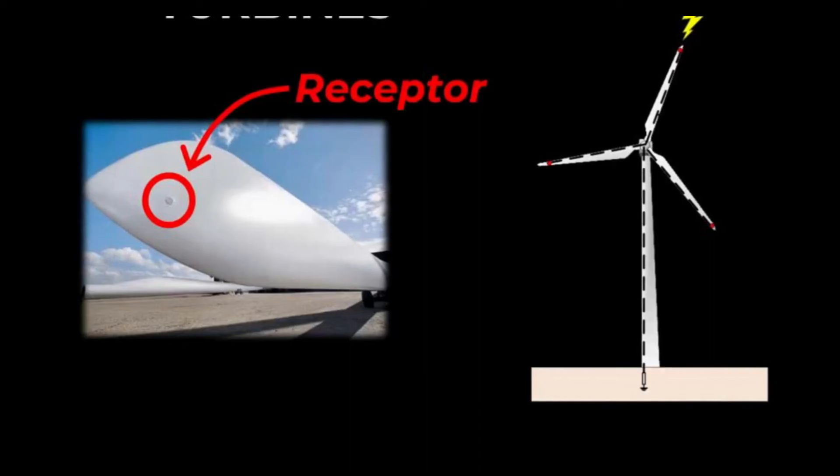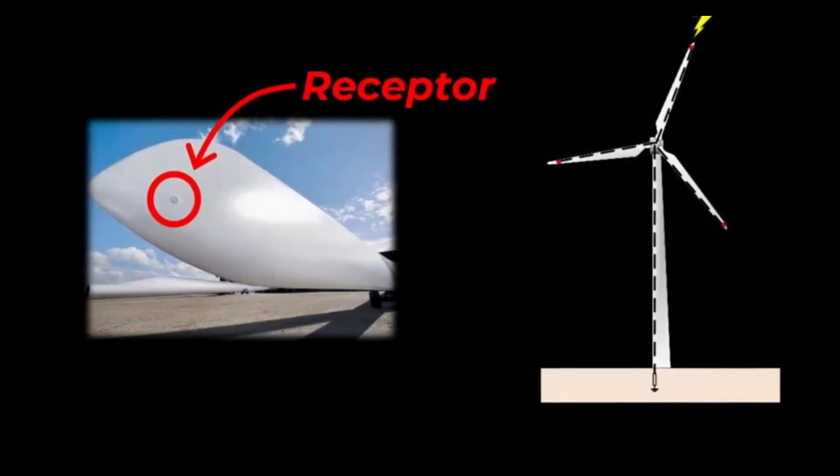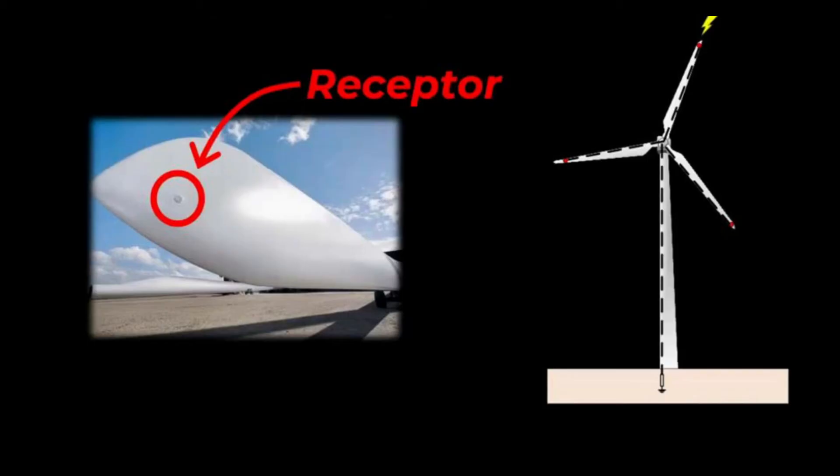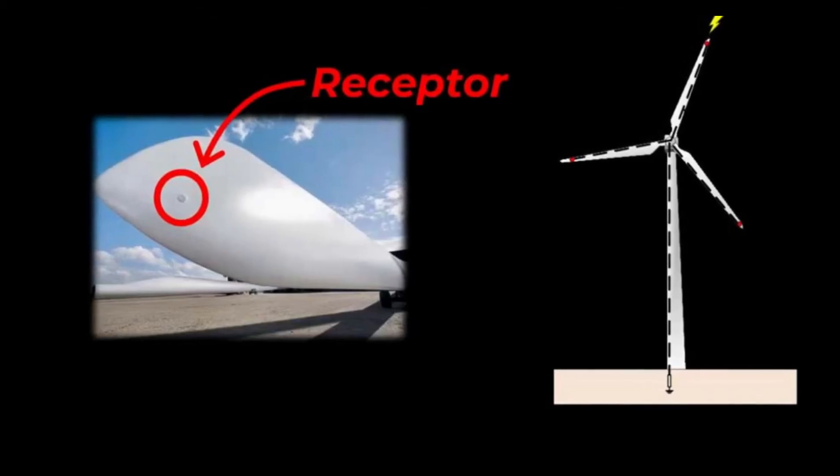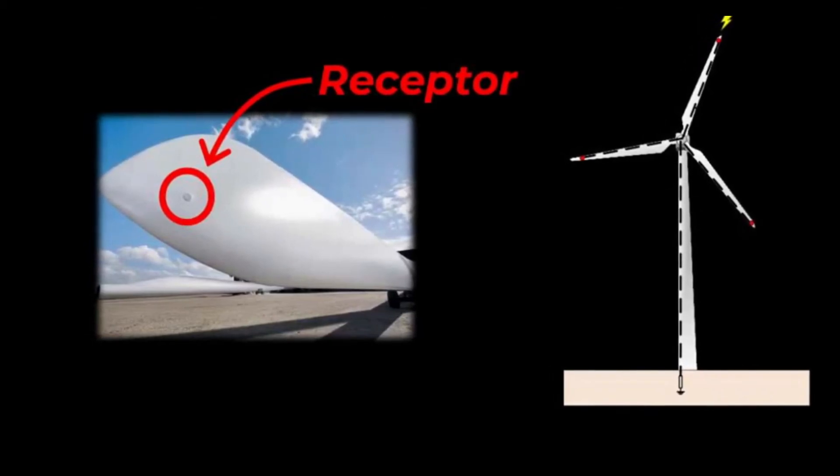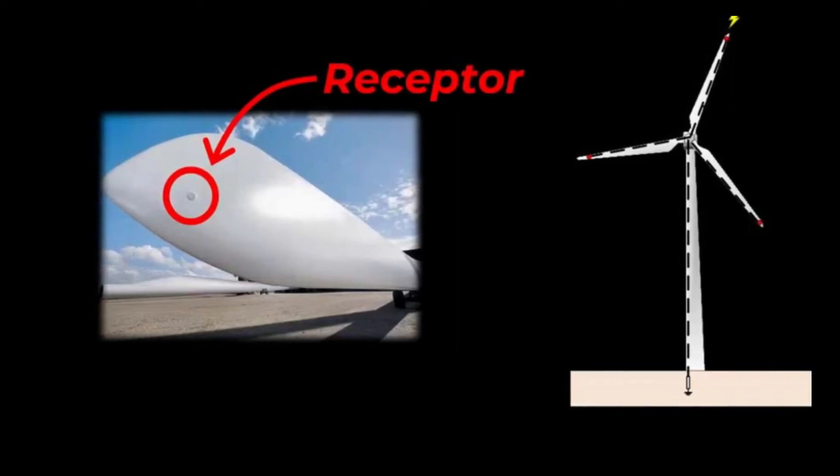One important part of this system is the lightning receptors. These receptors act like lightning magnets, attracting the electrical energy and safely guiding it to the ground. They help protect the important parts of the turbine from damage.